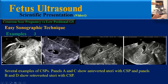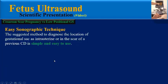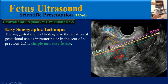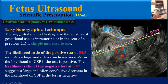These two images show a retroverted uterus with CSP. The suggested method to diagnose the location of the gestational sac as intrauterine or within the scar of a previous caesarean delivery is simple and easy to use, requiring only one longitudinal image of the uterus in transvaginal ultrasound. The likelihood ratio of a positive test of 84 indicates a large and often conclusive increase in the likelihood of CSP if the test is positive. The likelihood ratio of a negative test of 0.07 suggests a large and often conclusive decrease in the likelihood of CSP if the test is negative.